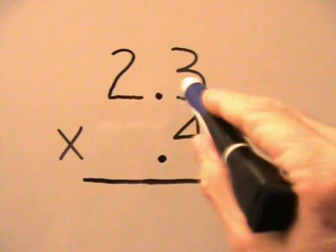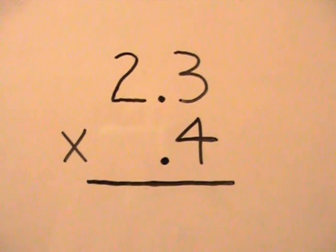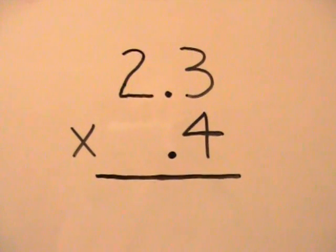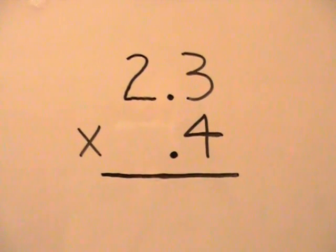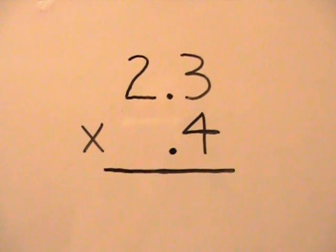On the board, we have 2.3 times .4. When we multiply decimals, we're going to work out the problem first and then add our decimal at the end.